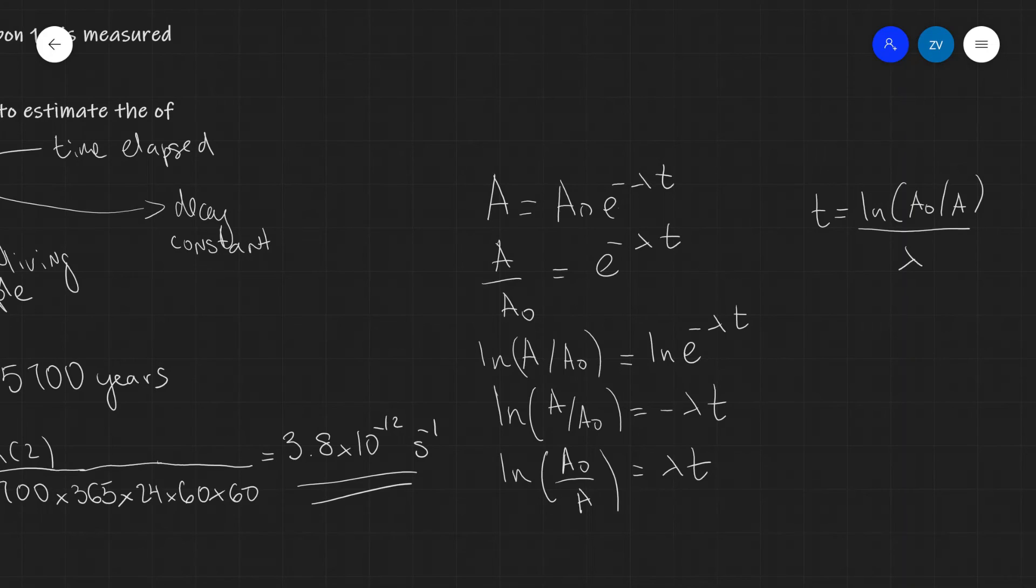For radioactive carbon dating, A₀ and A are taken from the samples, and I've shown you how we calculate λ, the decay constant, which is about 3.8 times 10 to the power of minus 12 seconds to the power of minus 1.